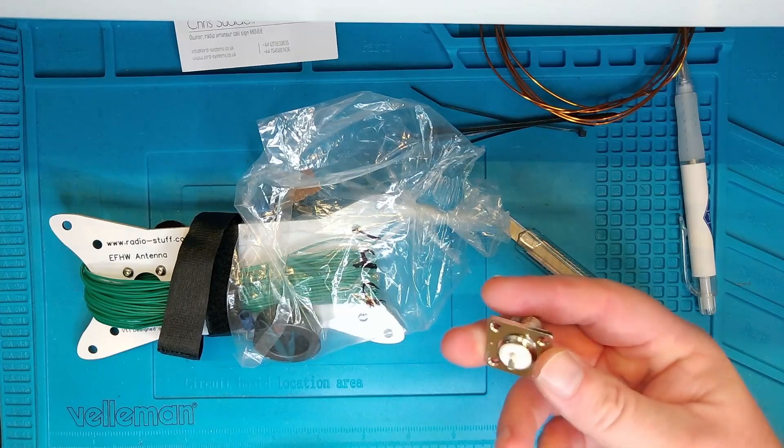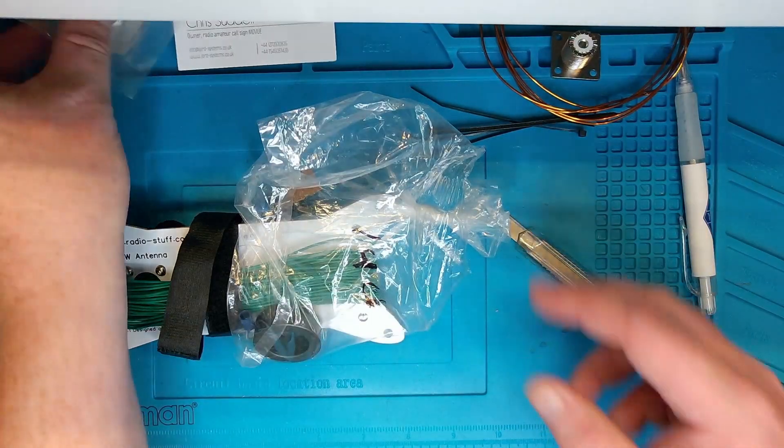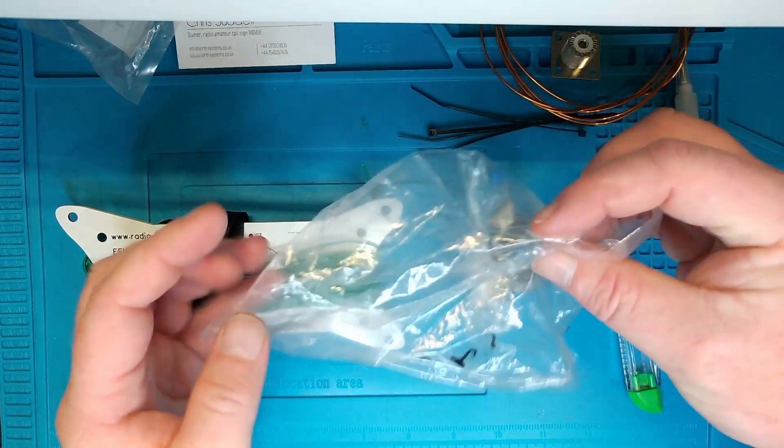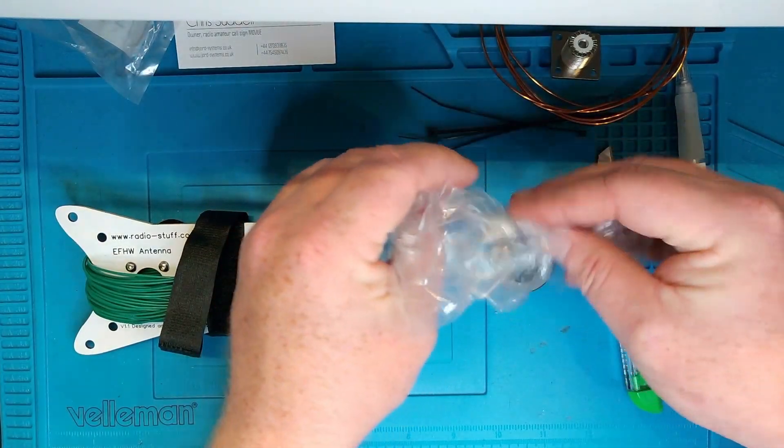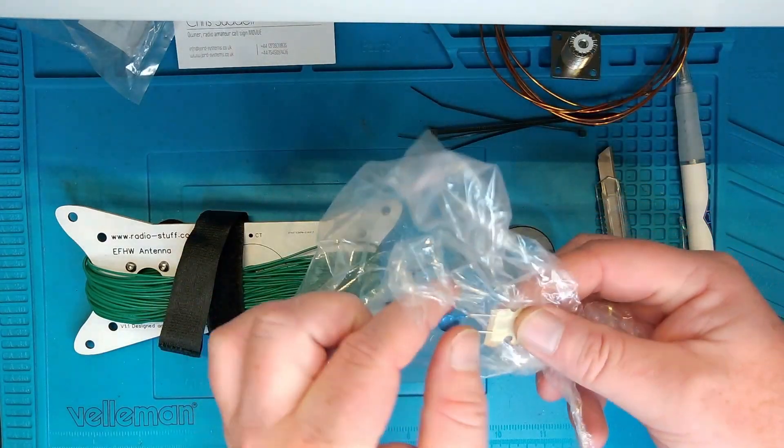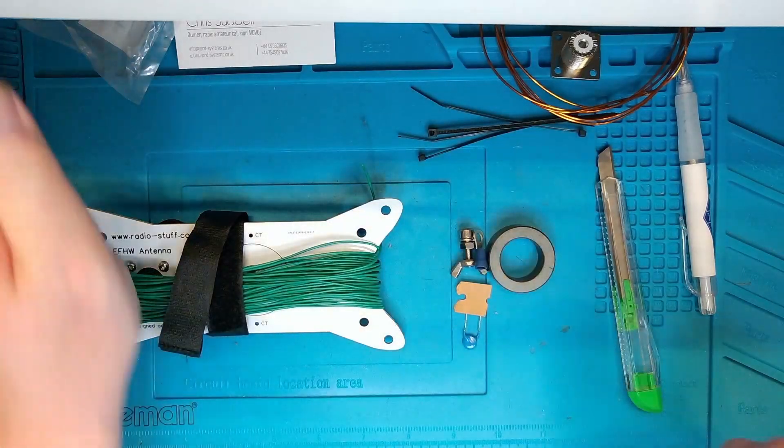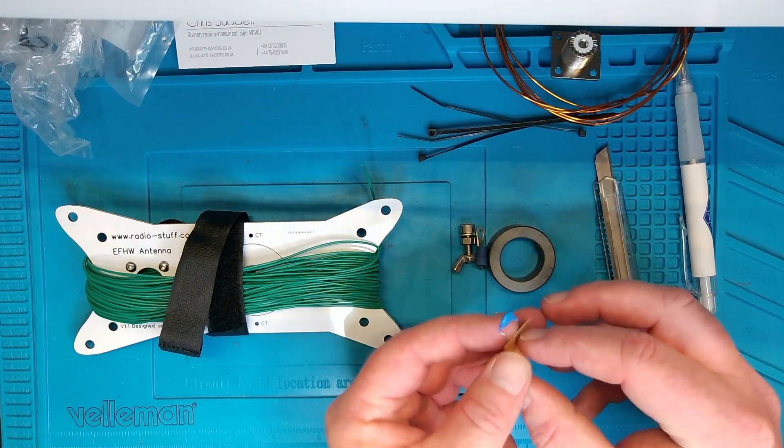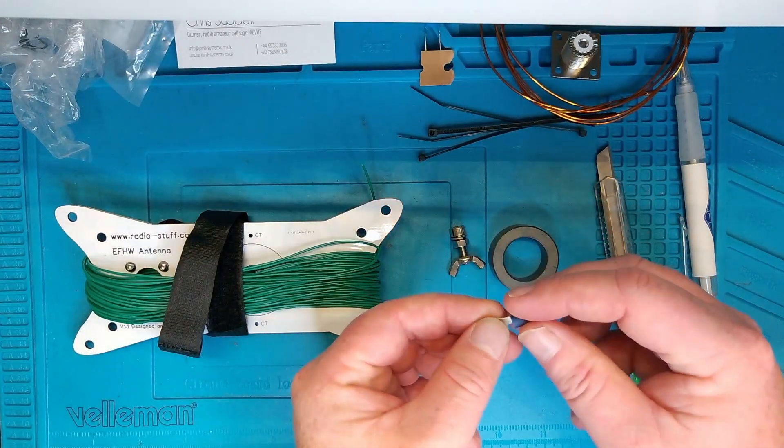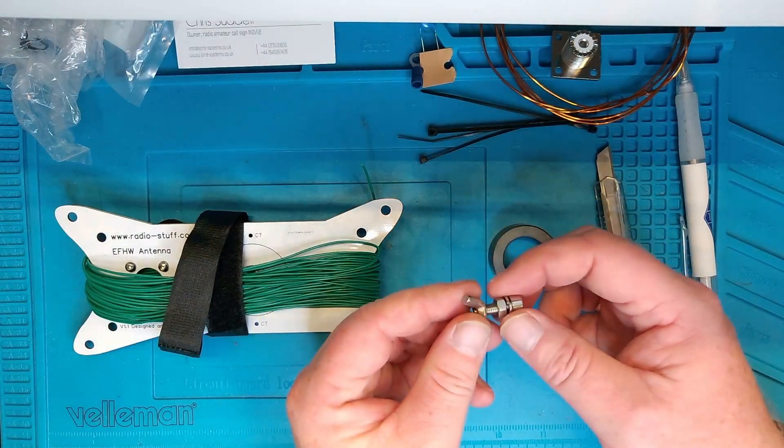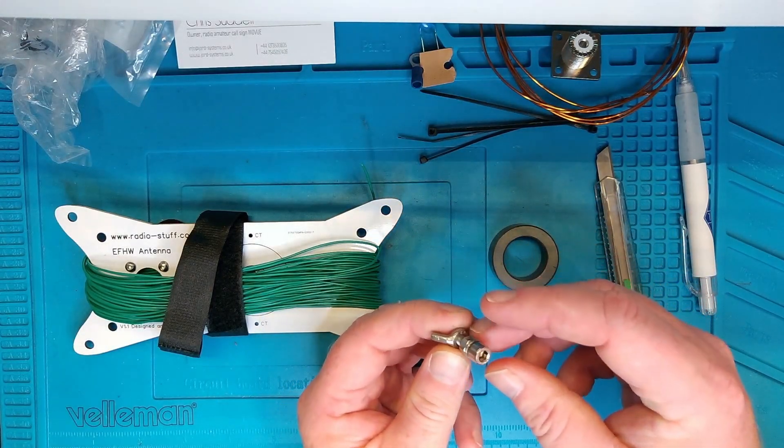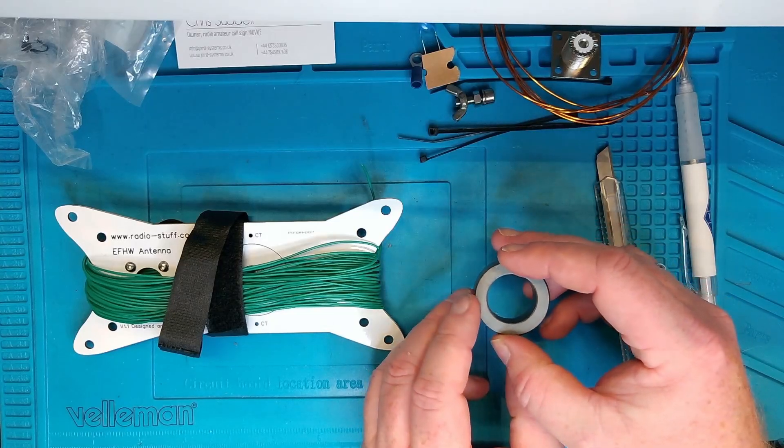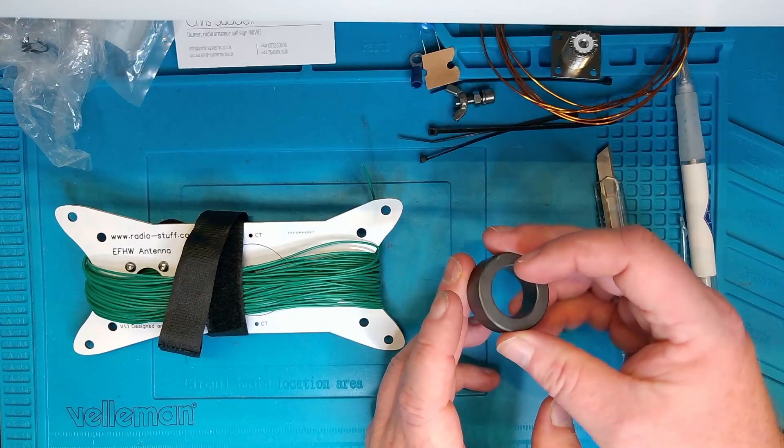You get some enameled wire here for the un-un. You get a SO239 connector. You get the capacitor for the antenna, a ring connector, some nice stainless steel hardware for the antenna connection. And you get the toroid, it's 43-140 I think it is, at least according to the specs on the website.